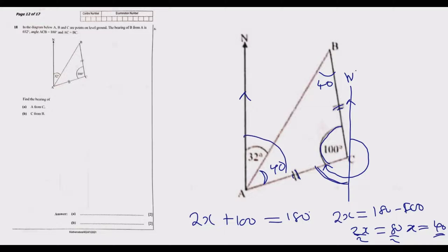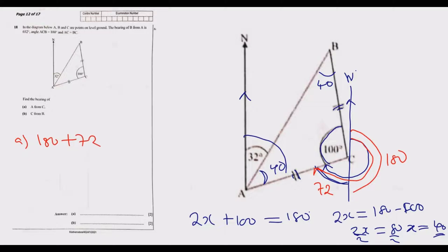Since the north lines are parallel, the corresponding angle at C equals 32 plus 40, which is 72 degrees. To find the full bearing of A from C, we go from north through 180 degrees plus 72 degrees, giving us 252 — actually 180 plus 72 equals 252. The bearing of A from C is 232 degrees.